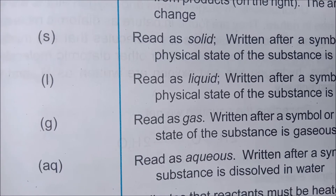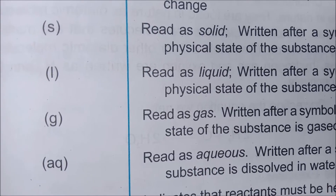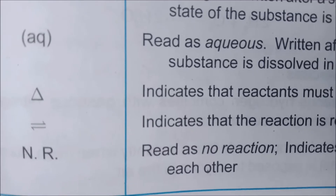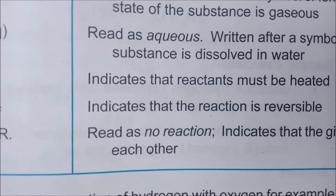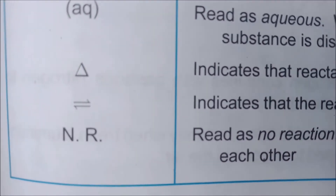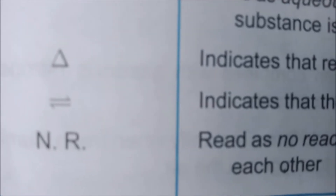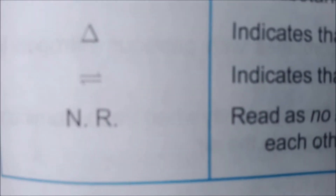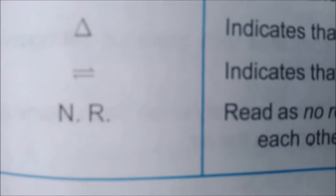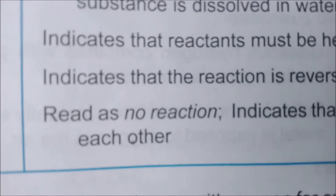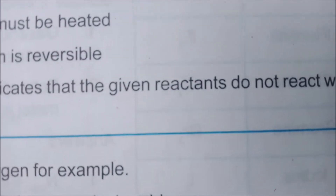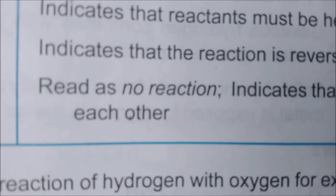So the subscripts used are: s, l, g, and aq. The triangle symbol indicates that the reactants must be heated. A double arrow — one going left and one going right — indicates that the reaction is reversible. If you see the symbol NR, it indicates that no reaction has occurred, meaning the given reactants do not react with each other.